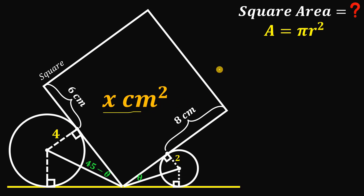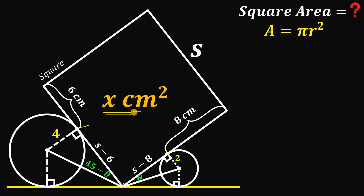Let s be the side length of the square. Then the measure of one segment along the side is s − 8, and the measure of the other segment is s − 6. Using this information, we can now find the value of the area, so let's proceed.